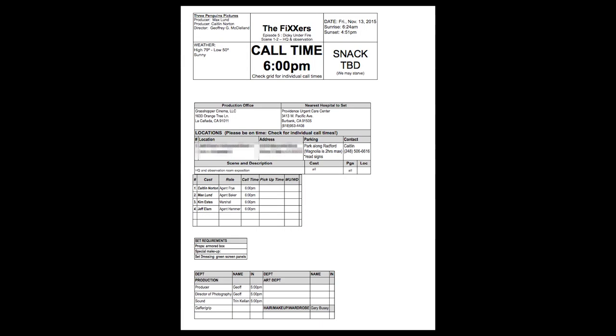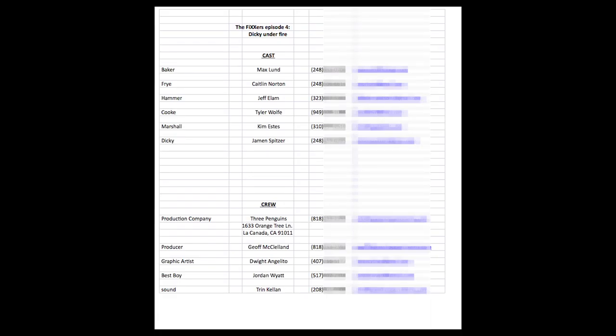The call sheet lists all the cast and crew that need to be there. It says what time they need to arrive on set and what's expected of them. It also has extra information like where parking is available and what the weather's going to be like that day. This is not super exciting stuff, but it is very important if you want to get anything done. The final thing you're going to need is a cast and crew contact sheet so that everybody on set can get a hold of anybody else on set — whether they're stuck in traffic or they need to make a run for supplies.